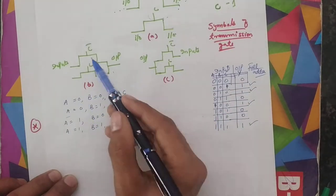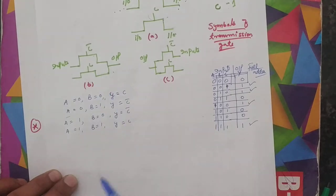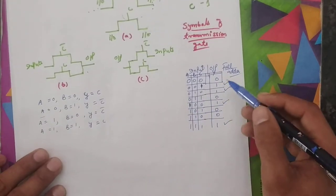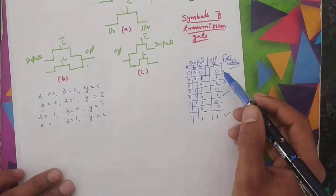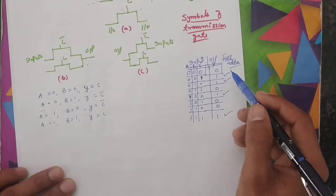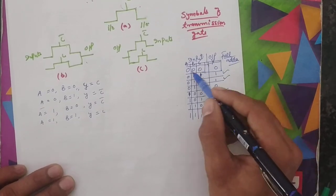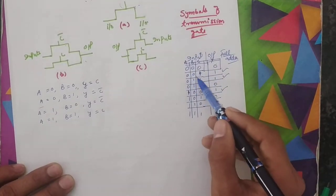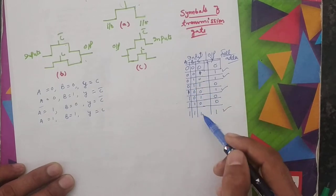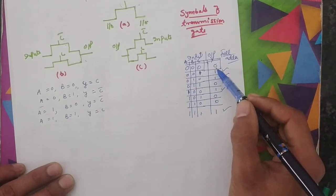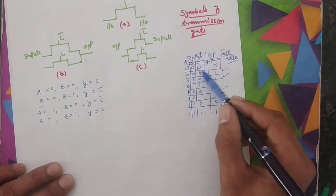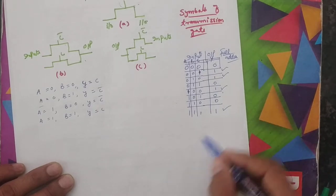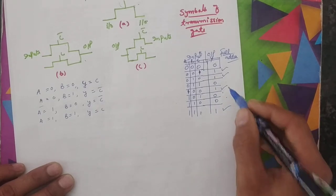As an example, I have a full adder. This is the truth table of the full adder — inputs 0,0,0 and 0,0,1 and so on, with 8 input combinations. The output of the full adder is shown here: 0, 0, 0 and the remaining output values.